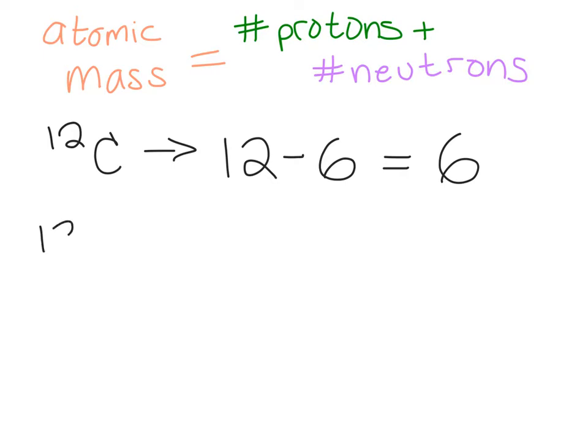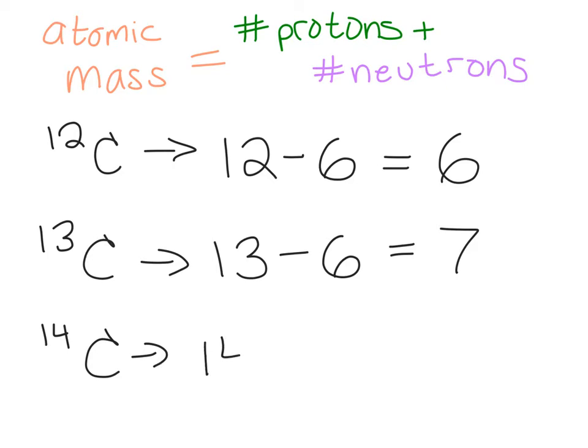The same can be done for carbon-13. Here, its atomic mass is 13. You know carbon always has six protons, so when you subtract 6 from 13, you get 7. And we can do the same thing for carbon-14. The atomic mass is 14, minus carbon always has six protons, so you get 8 neutrons.